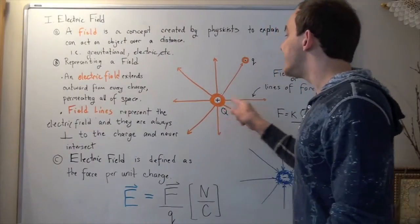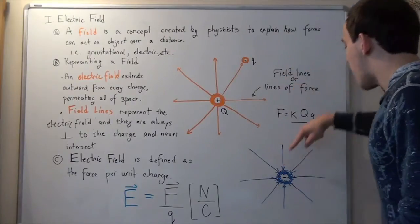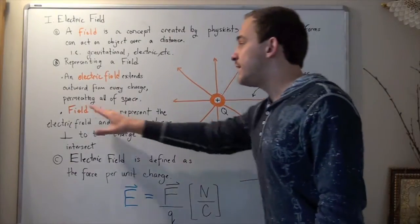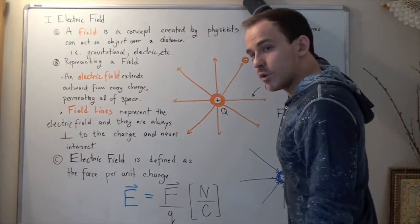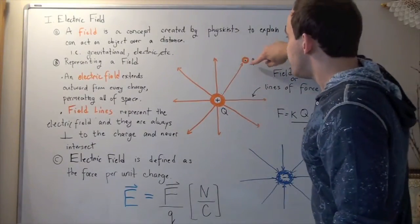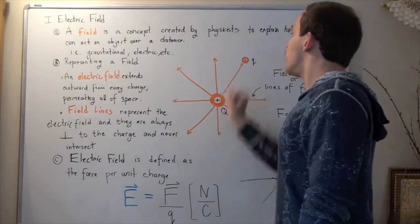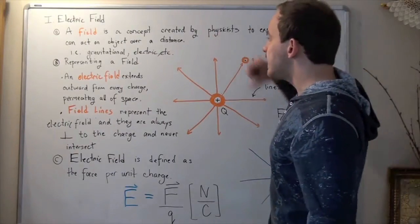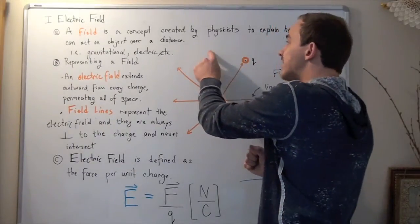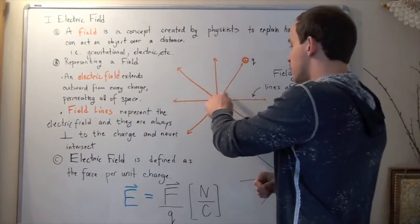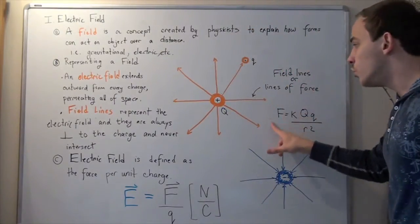If we have a negative charge, field lines will travel into the charge. In other words, field lines always travel from positive to negative. That's why if you place a positive charge near a positive charge, the force pushes it away. But if you place a negative charge there, the force will attract it — attract our electron to the positive charge. And we can find the force with which it attracts it by using Coulomb's Law.